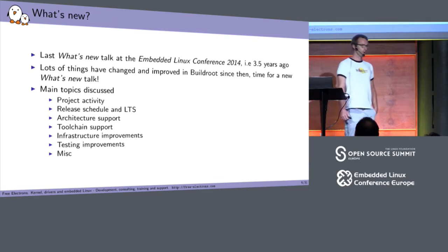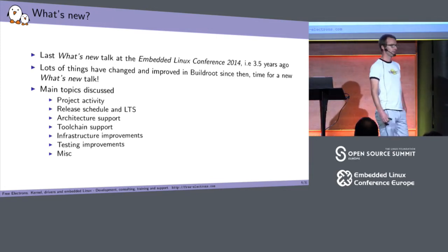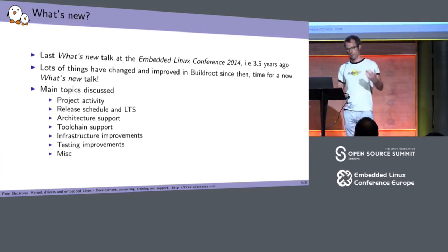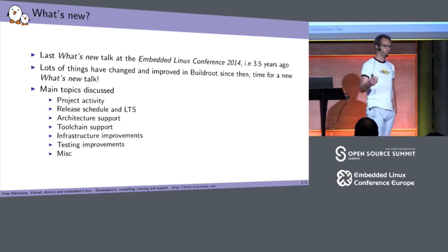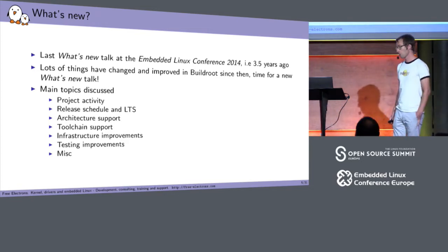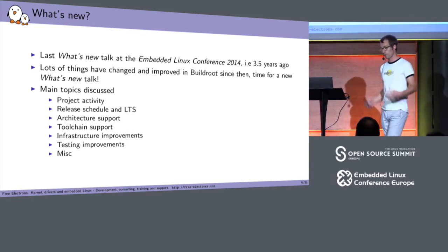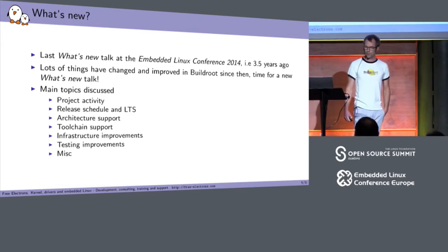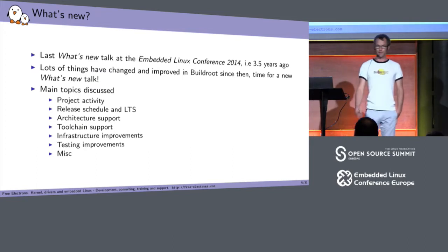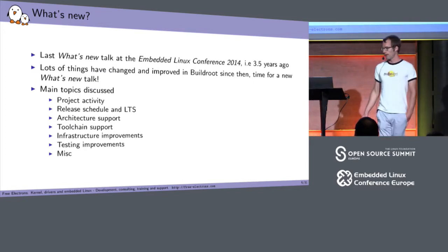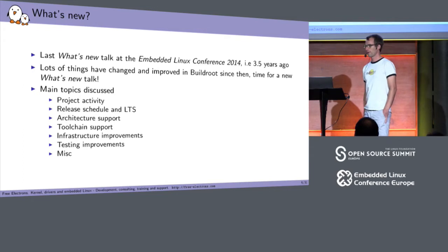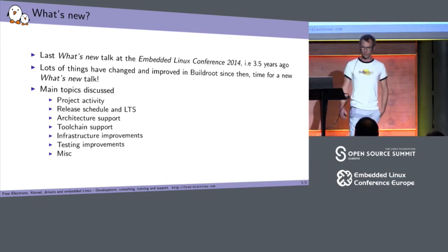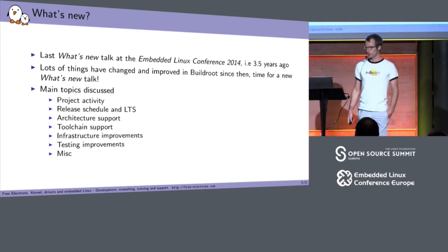I made a similar talk about three and a half years ago at ELC in the US in 2014. It's been a while since we haven't presented the new features and improvements in Buildroot, and when you make the summary there's a fair number of them. I wanted to share details about project activity, the release schedule, improvements in architecture support, toolchain support, core Buildroot infrastructure, testing improvements, and a few other details.